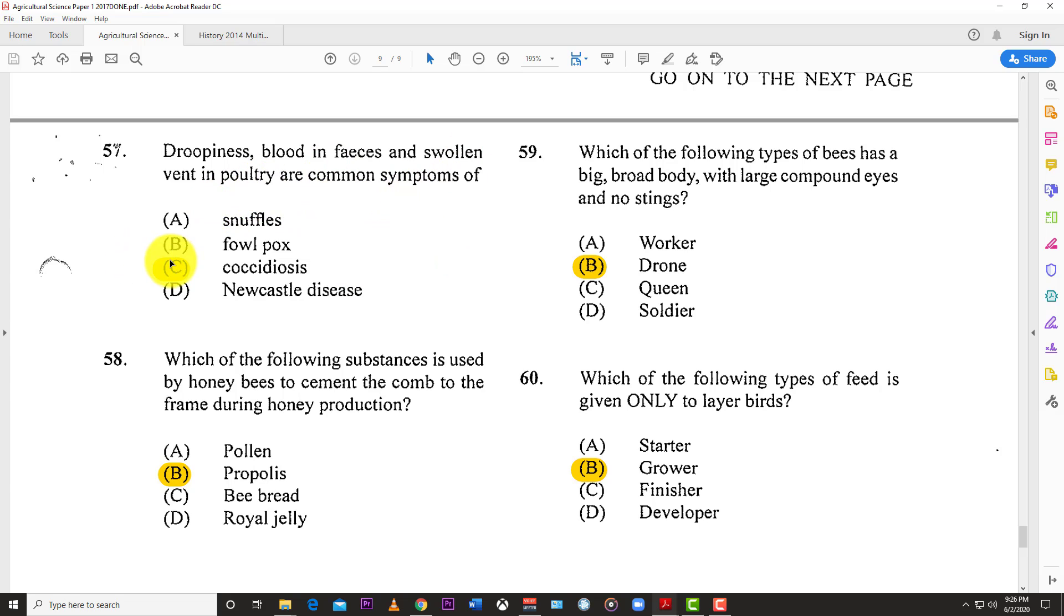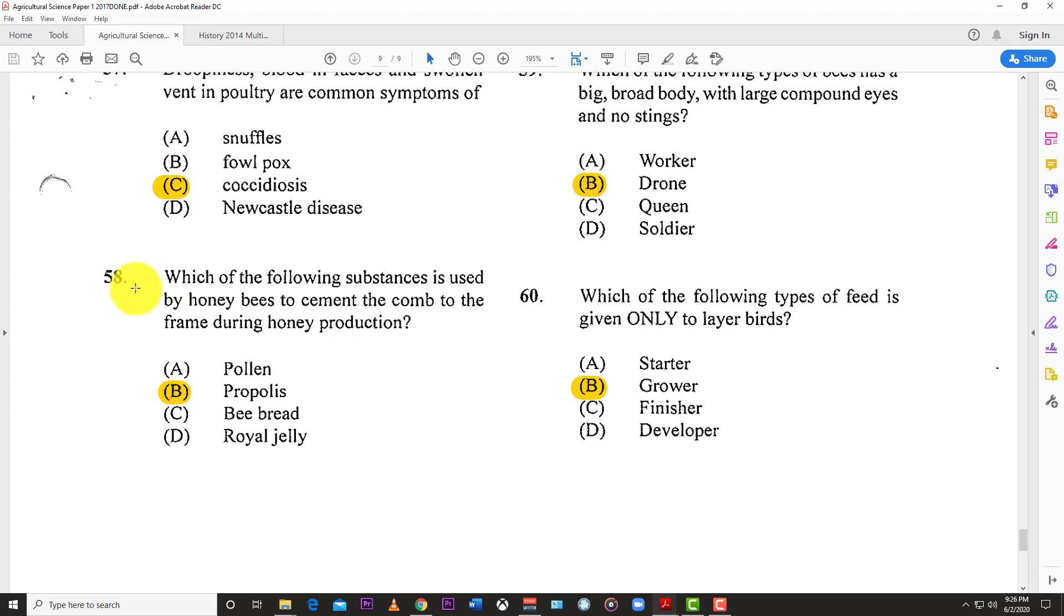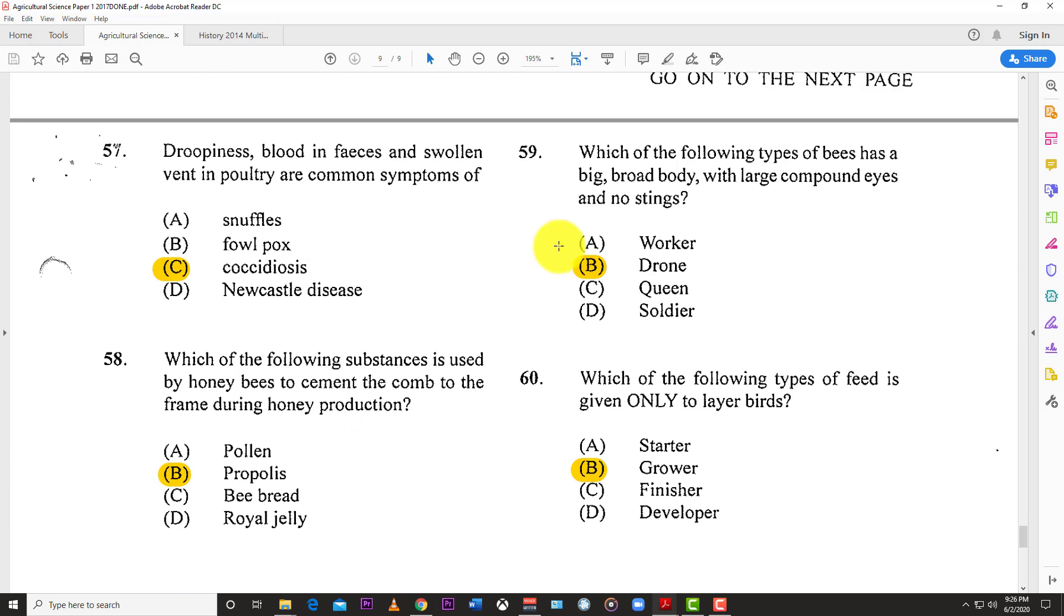Number fifty-seven: Droopiness, blood in feces, and swollen vent in poultry are common symptoms of C, coccidiosis, the disease coccidiosis.